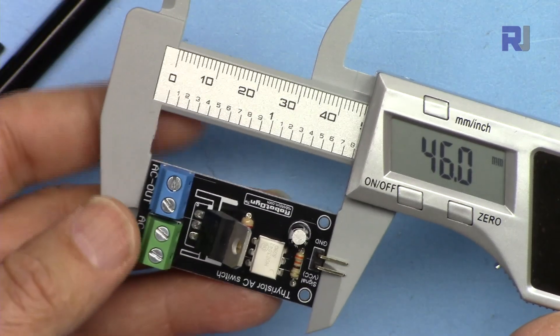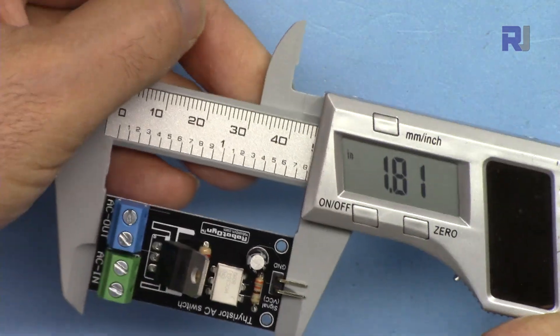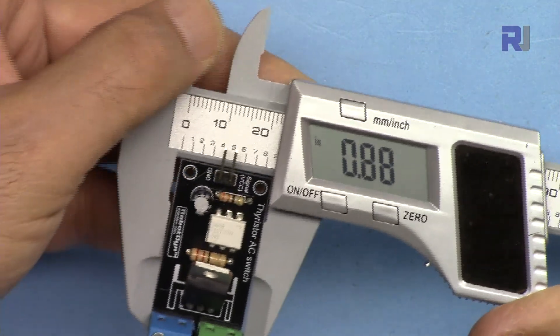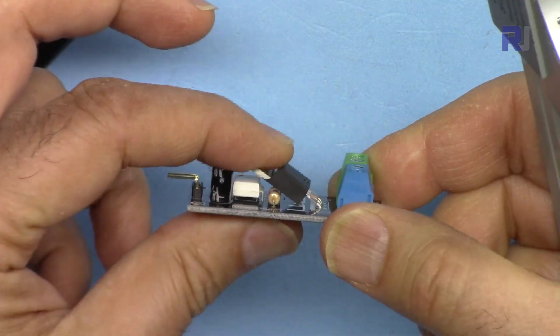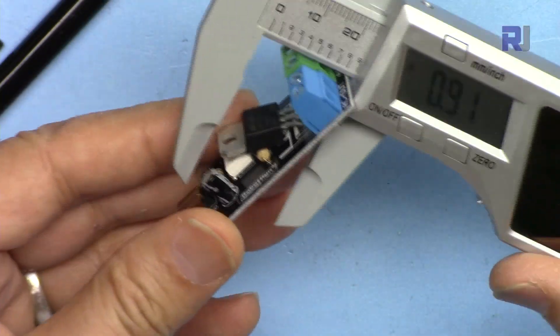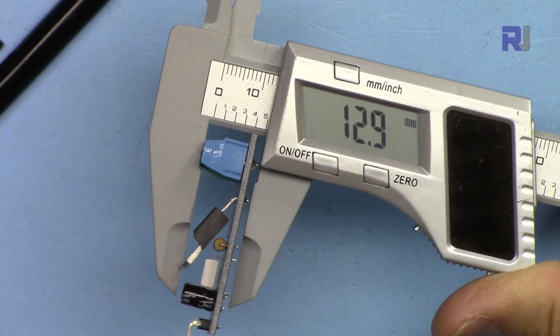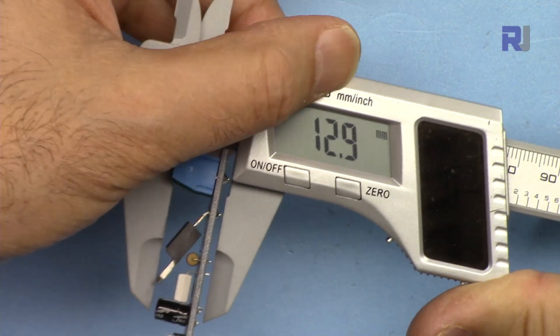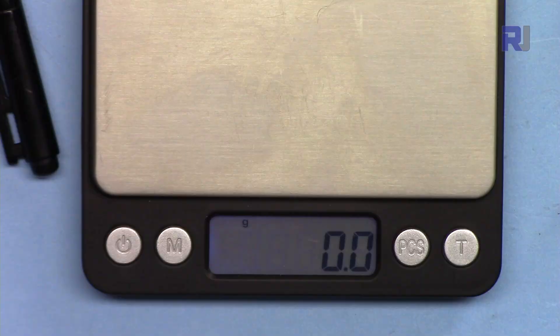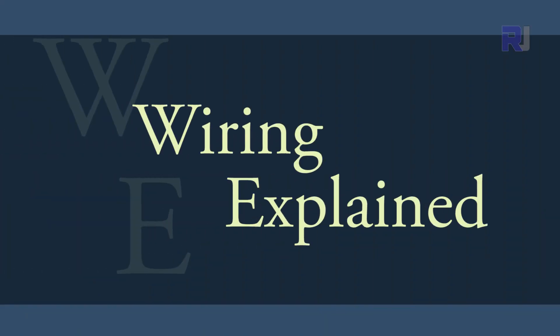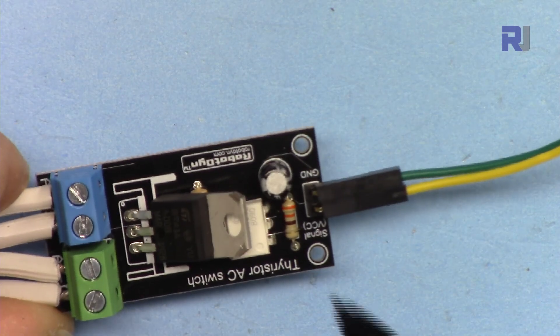The length of the module is 46 millimeters or 1.81 inches. The width is 22.4 millimeters or 0.88 inches. The depth is 12.9 millimeters or 0.51 inches, and if you're interested in weight, it weighs exactly 10 grams.